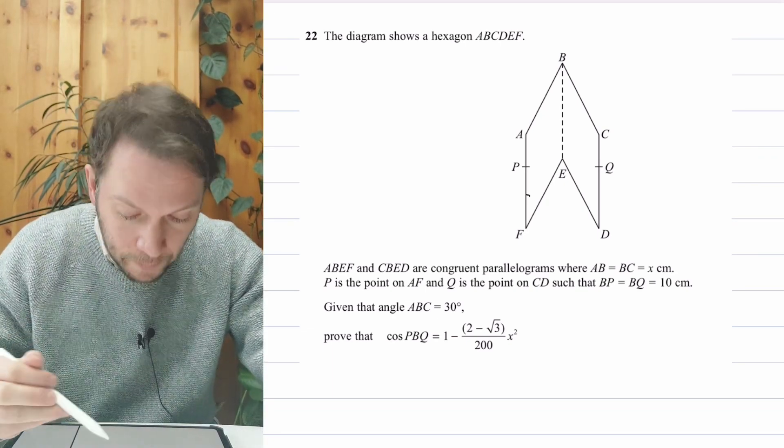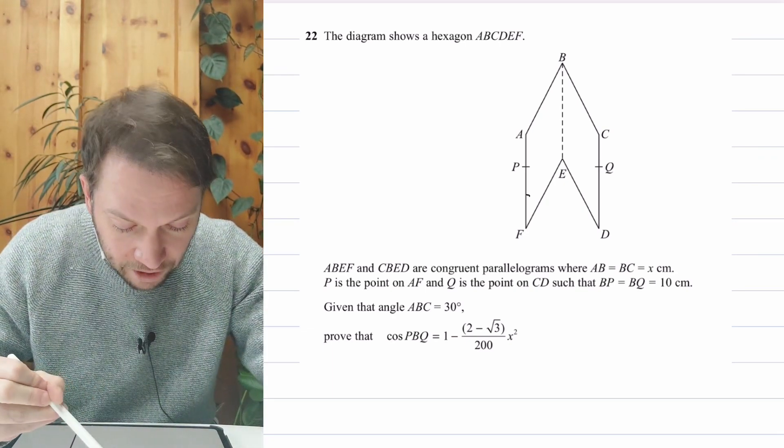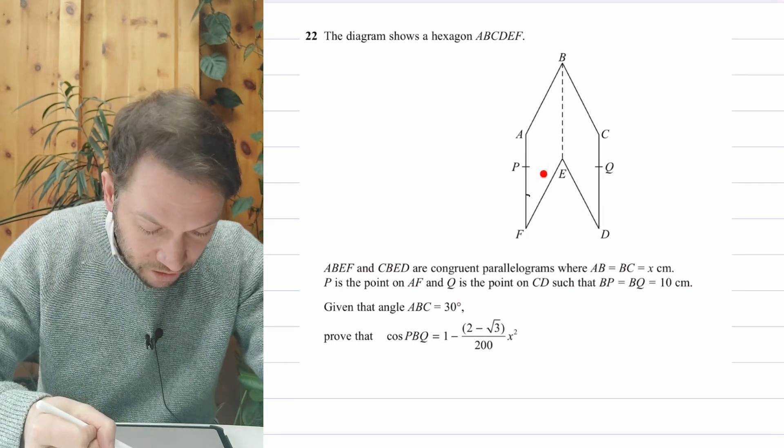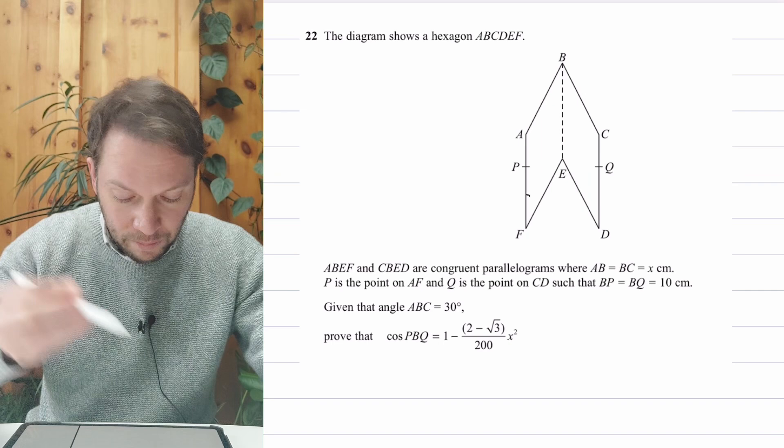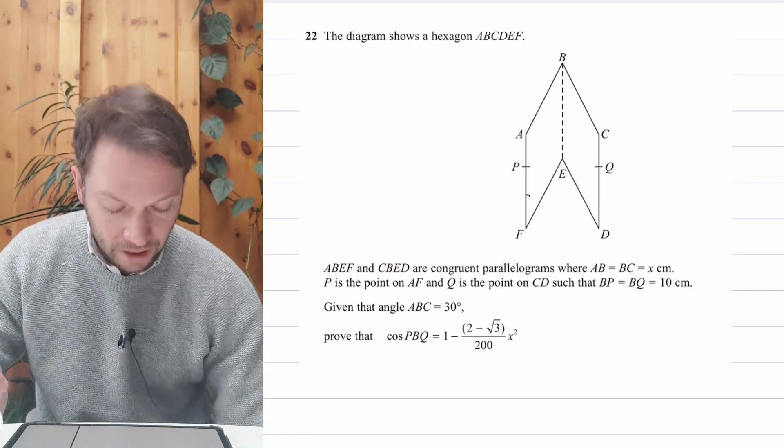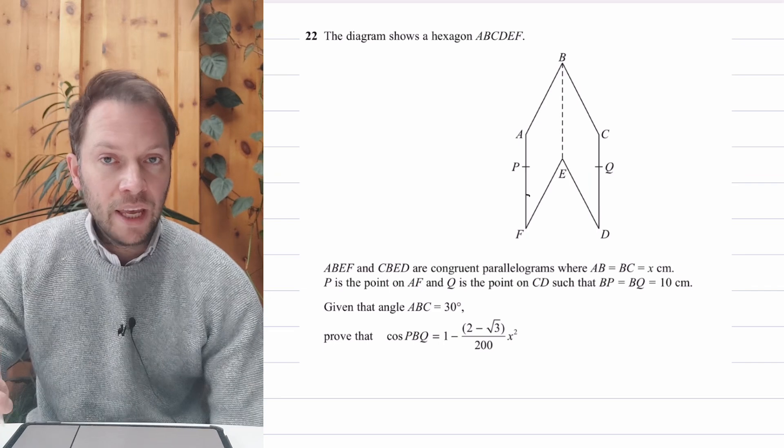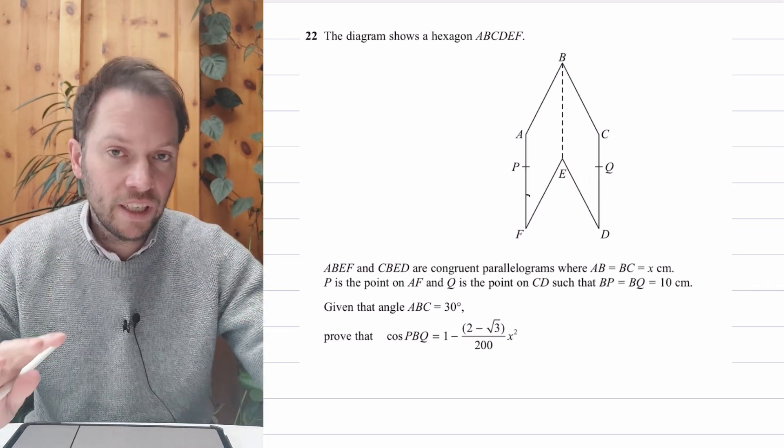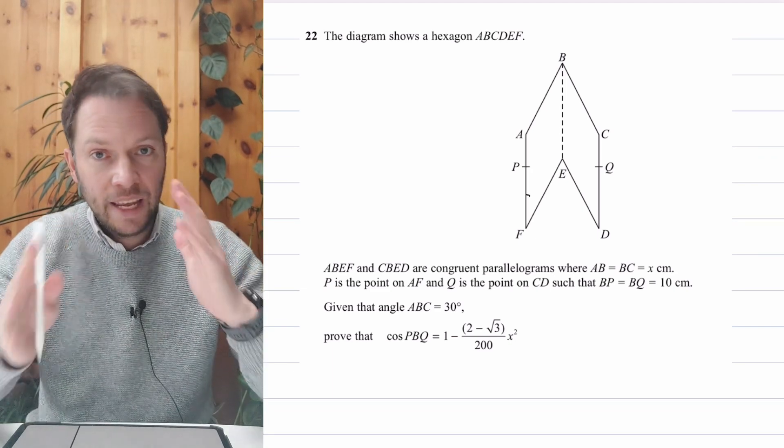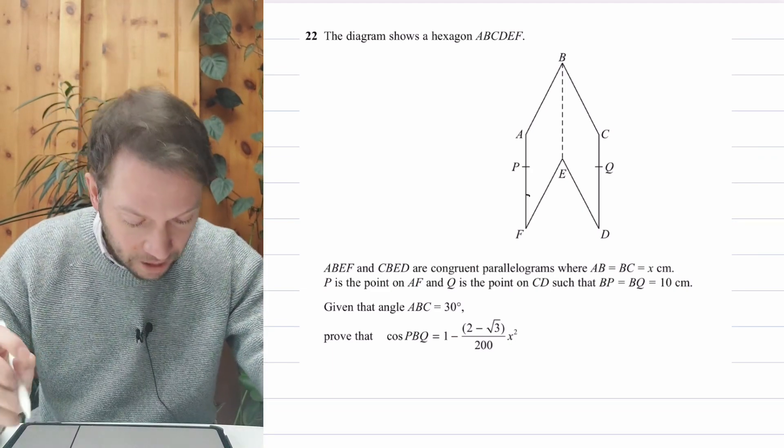So let's look at the question first. We've got a diagram showing a hexagon ABCDEF. We've got ABEF, which is this shape here, and CBED here. They're both congruent parallelograms. Remember that a parallelogram is a quadrilateral, a four-sided shape, where you've got two pairs of parallel sides. And congruent just means they're exactly the same size and shape.